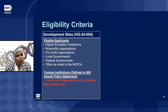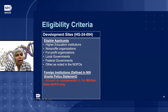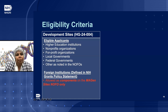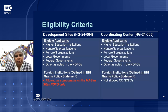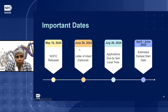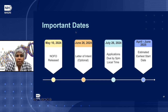Regarding eligibility: for-profit organizations are allowed and eligible applicants. Foreign institutions as defined in the NIH grants policy statement are allowed in the site's NOFO, but only as components. For the coordinating center, foreign institutions are not allowed. Important dates: the NOFO was released on May 10th; today is the last day to submit the optional letter of intent. July 26th is the application due date by 5 p.m. The estimated award start date is between April and June 2025.